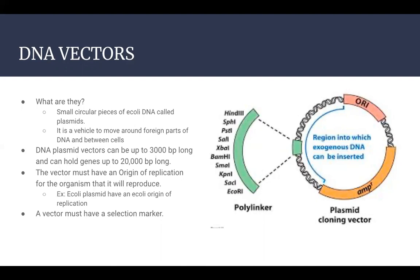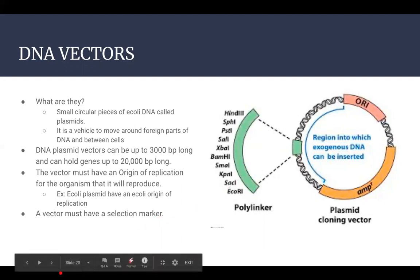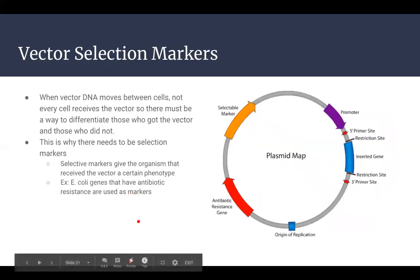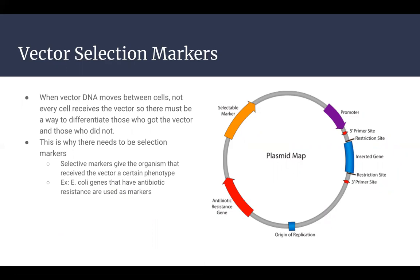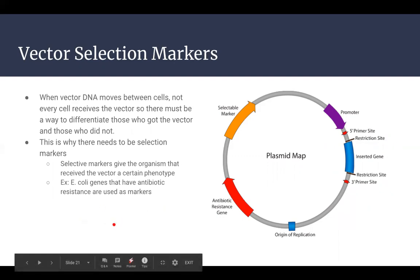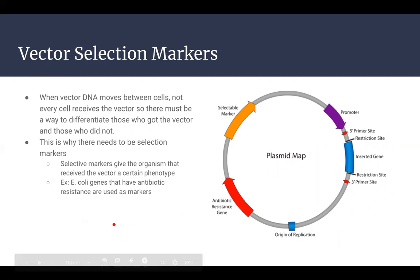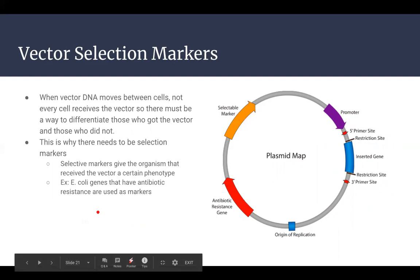A vector must also have a selection marker. As DNA moves between cells, there must be a way to differentiate which cells received the vectors and which did not. Selection markers give an organism a certain phenotype, and based on that phenotype you know whether the plasmid was inserted into the cell's DNA. For example, E. coli has antibiotic resistance that can be used as a selective marker when inserting plasmids.